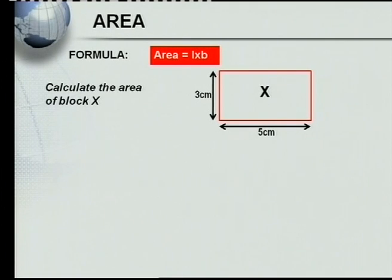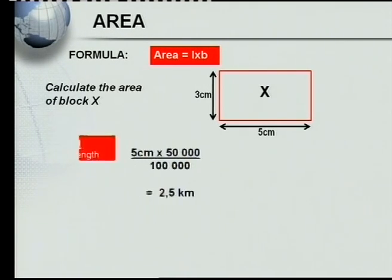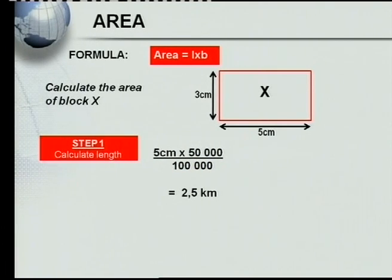We've got block X here. Let's have a look at this. The first step is calculate the length. We've got our length here. The length here would be 5 centimeters times 50,000 divided by 100,000, which would give us 2.5 kilometers.